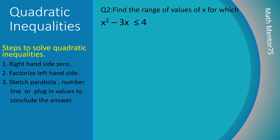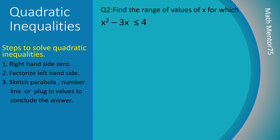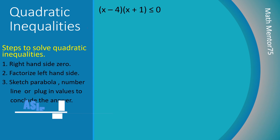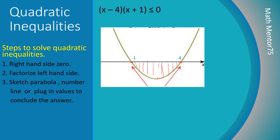Let's do one more example using the same expression but with the inequality sign changed to less than. The process is the same: factorize keeping the right-hand side zero. The coefficient of x² is positive so the shape is U-shaped, and the x-intercepts are again -1 and 4. This time we need the portion of the curve which is negative — below the x-axis. Between -1 and 4 the curve is negative, so the answer is -1 ≤ x ≤ 4.